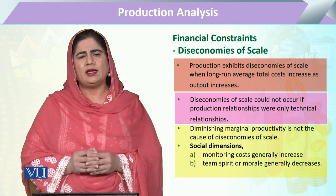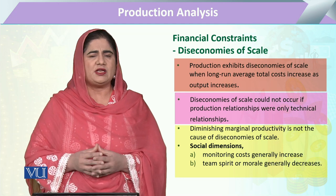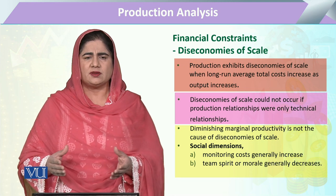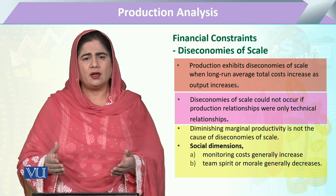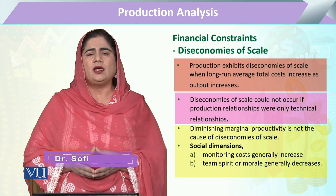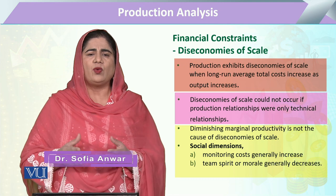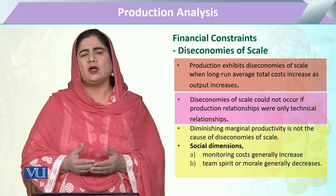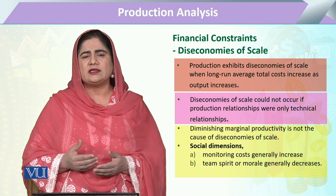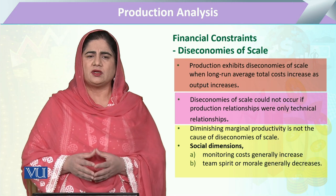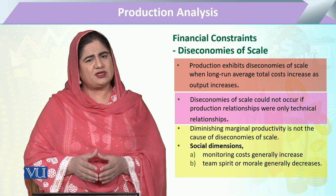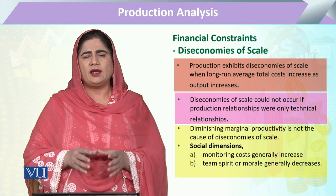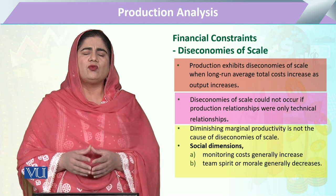Dis-economies of scale is particularly related with that phase of production when the entrepreneur has a strong wish to expand his business and he is expanding, but after a certain point he reaches a level where output is increasing but that increase in output is accompanied by an increase in the average cost of the business. So either that phase will be feasible for the entrepreneur or it will not be feasible.